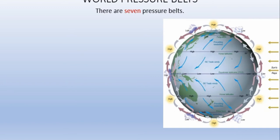The second belt is the subtropical high pressure belt, belonging to around 30 to 40 degrees north and south. In the doldrums, high temperature creates low pressure and low density — hot air is lighter. The subtropical high pressure belt, at about 30 to 40 degrees north and south, is also known as the horse latitudes.